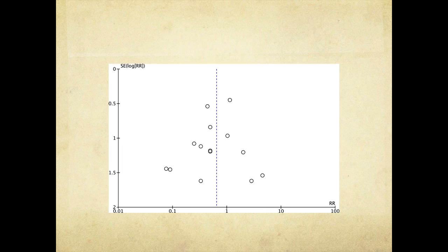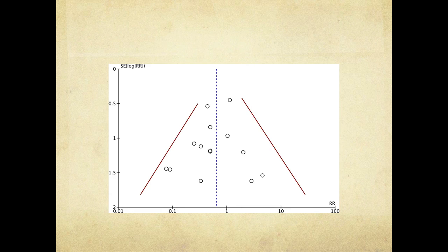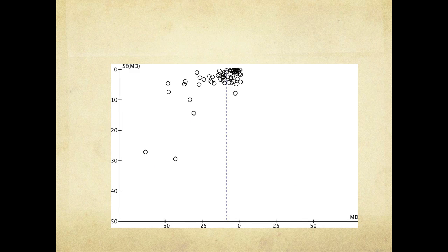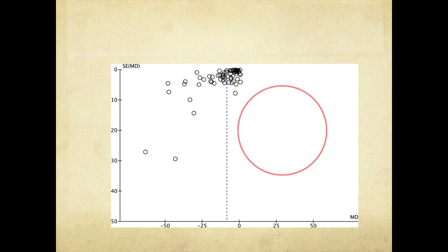Here's an example of a funnel plot where the y-axis is a measure of precision — standard error on a reverse scale — and the x-axis shows the effect estimate. A nice even inverted funnel indicates publication bias is unlikely. Another example shows the same axes but with an asymmetrical funnel, indicating there may be a whole set of studies on the other side that haven't been published simply because they were negative — the missing studies are visible on the right-hand side.